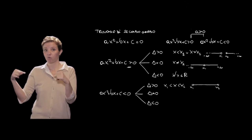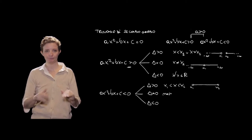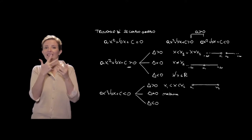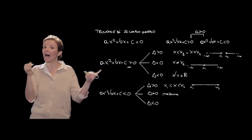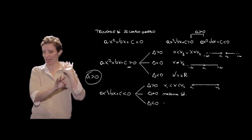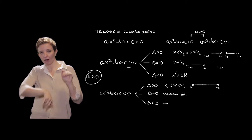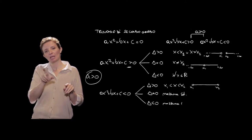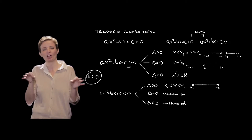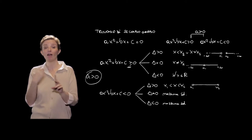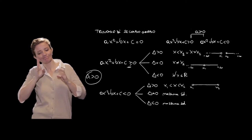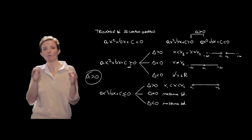Per delta = 0, non avremo alcuna soluzione: il trinomio non sarà mai negativo — ricordiamo che stiamo considerando il caso A > 0. Infine, per delta < 0, nuovamente nessuna soluzione, in quanto il trinomio sarà sempre positivo. Lo stesso discorso vale nel caso in cui si voglia studiare il trinomio ≥ 0 oppure ≤ 0.